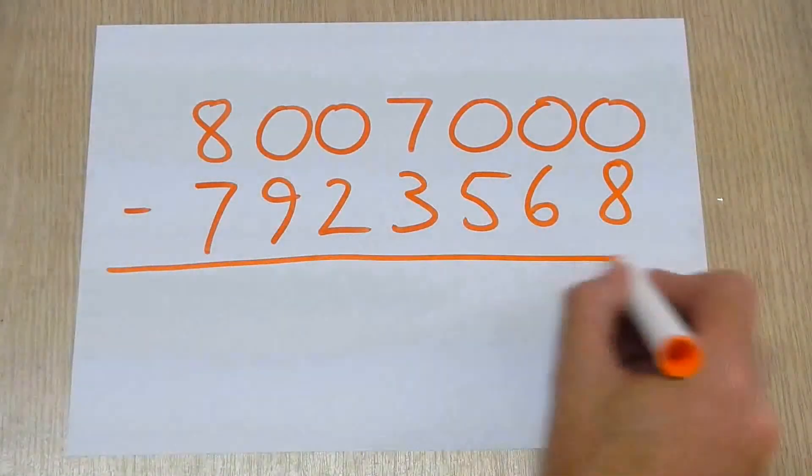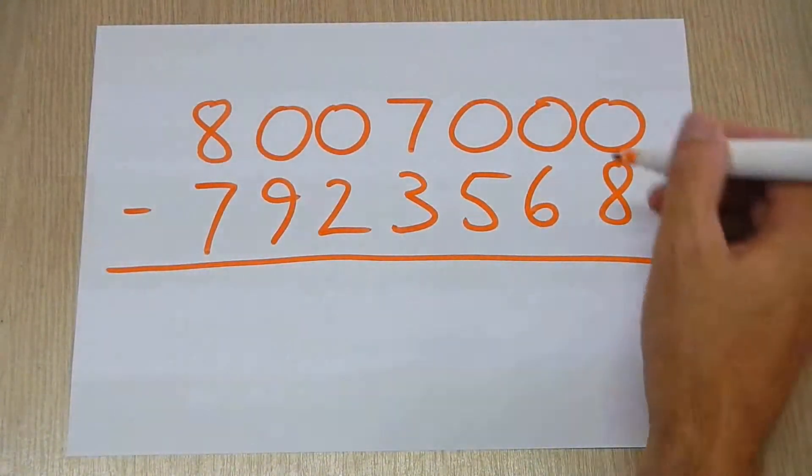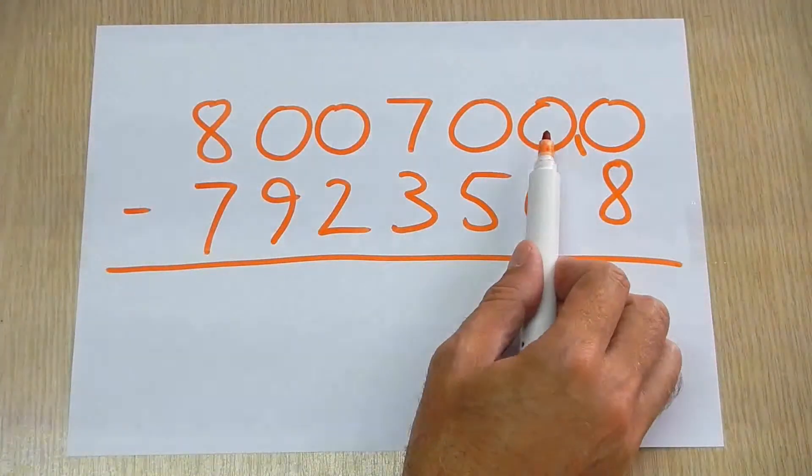Nice. So we're going to subtract that. Now straight away, we can do the very simplest thing. We can borrow 10 from here, can't we? Except we can't take it from there or there, so we've got to go right the way back to the 7,000.